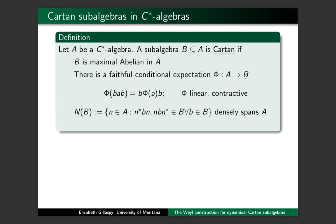In particular, φ is the identity on this subalgebra B — it's a projection of A onto B. The third condition is that the normalizer of B, the set of things in A such that when you conjugate B by them you land back inside B, this set of normalizers has to densely span the big C*-algebra. And finally, B has to contain an approximate identity for A. So B is maximal abelian, but it's not too far off from A — there are a lot of structural links between B and A if B is a Cartan subalgebra inside A.